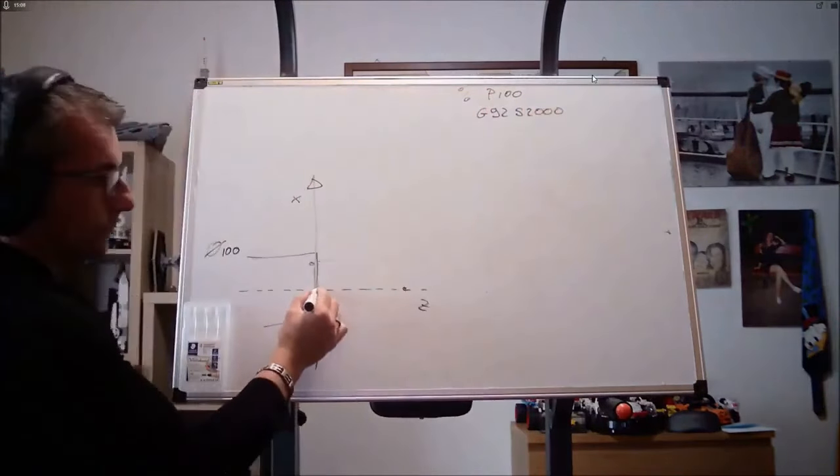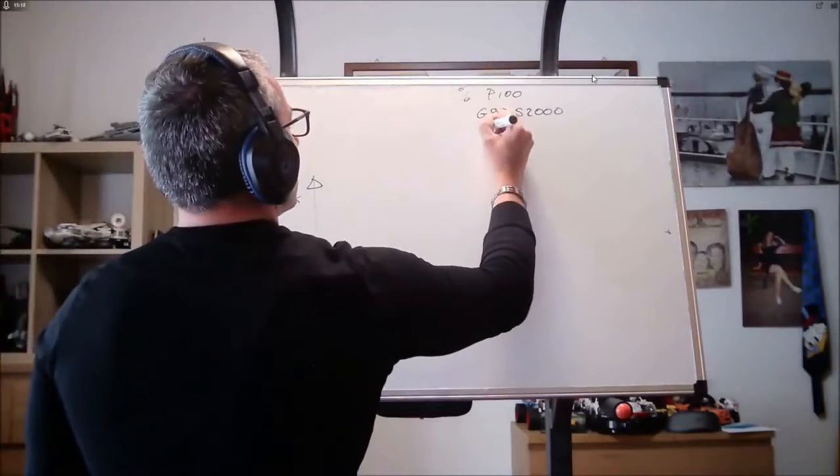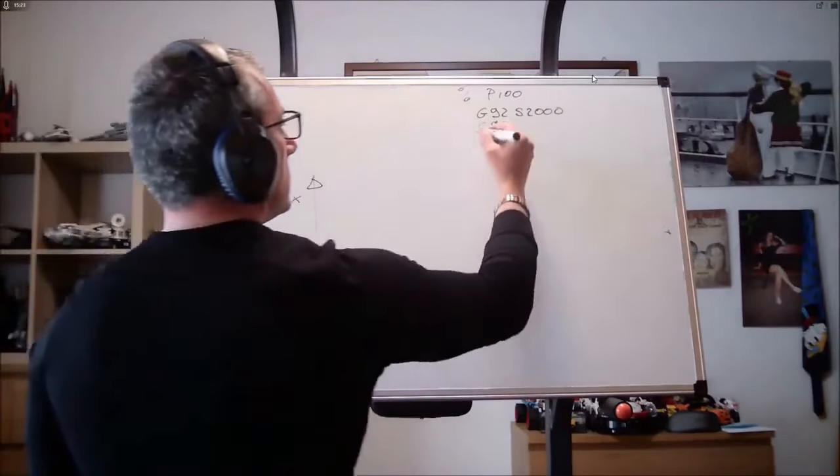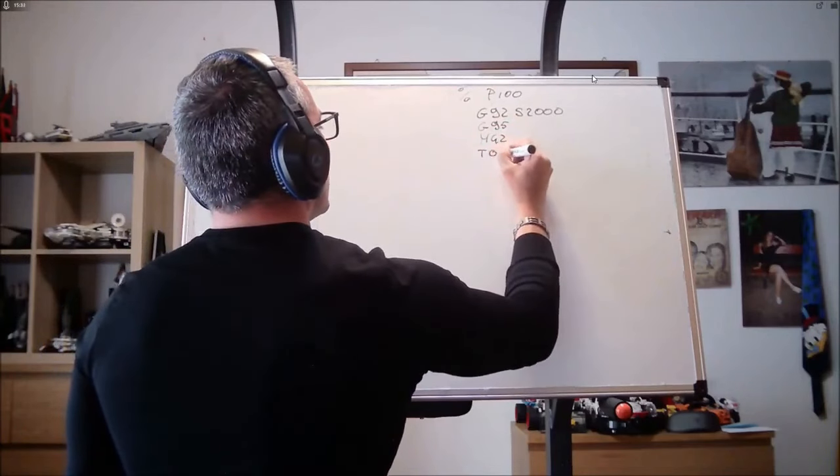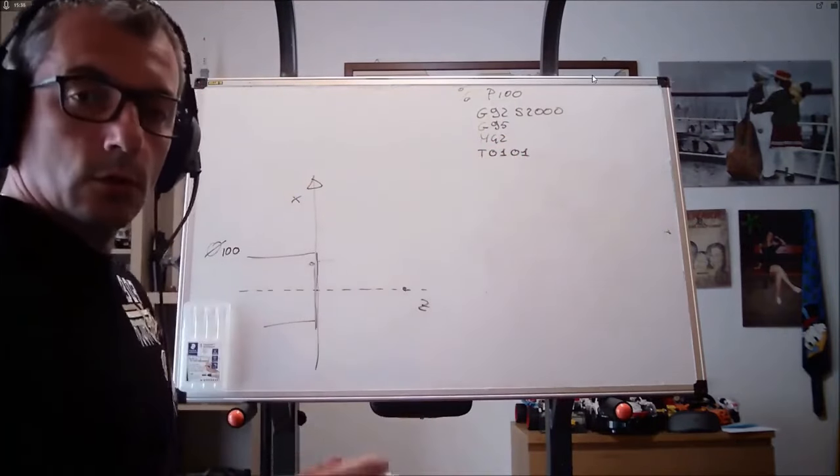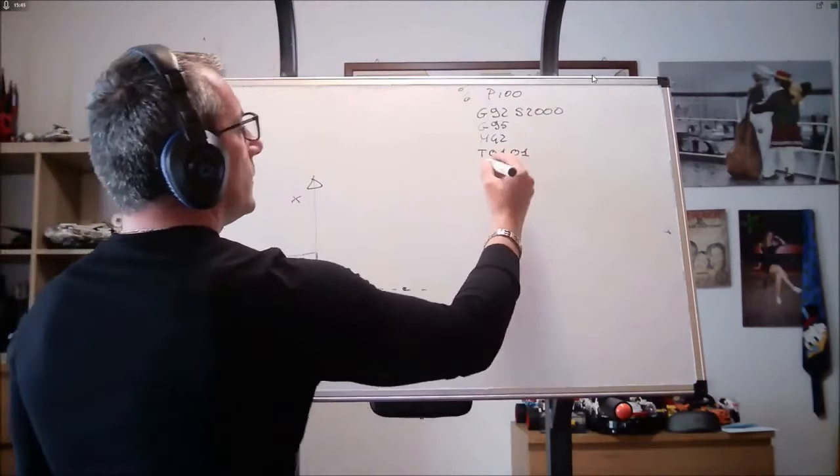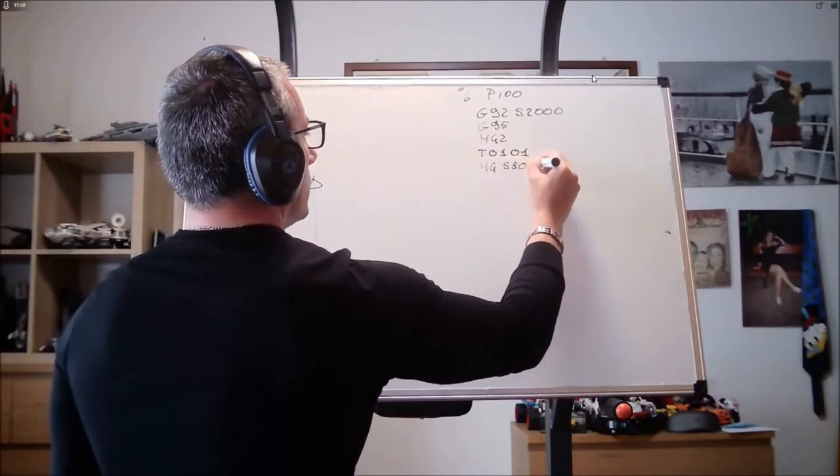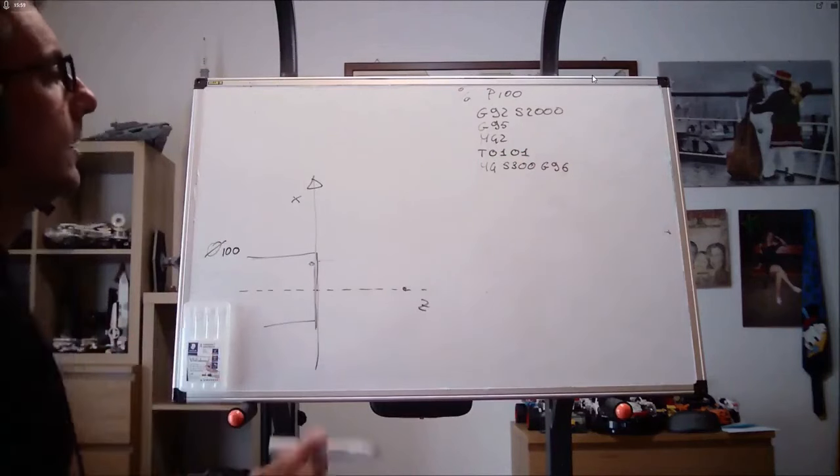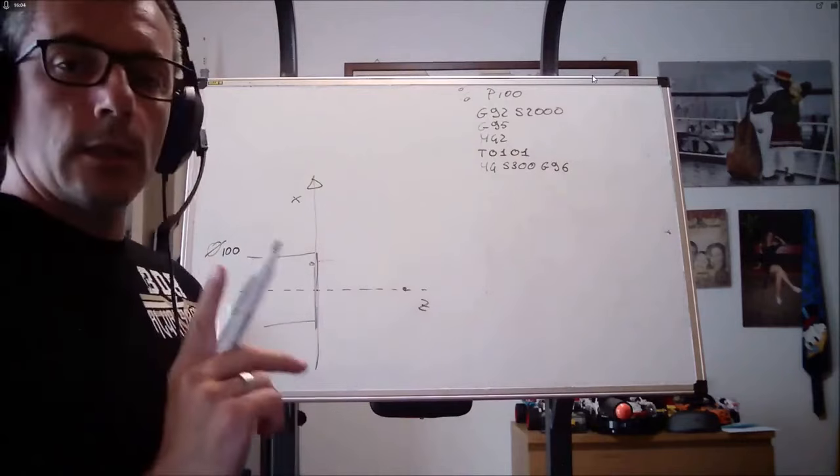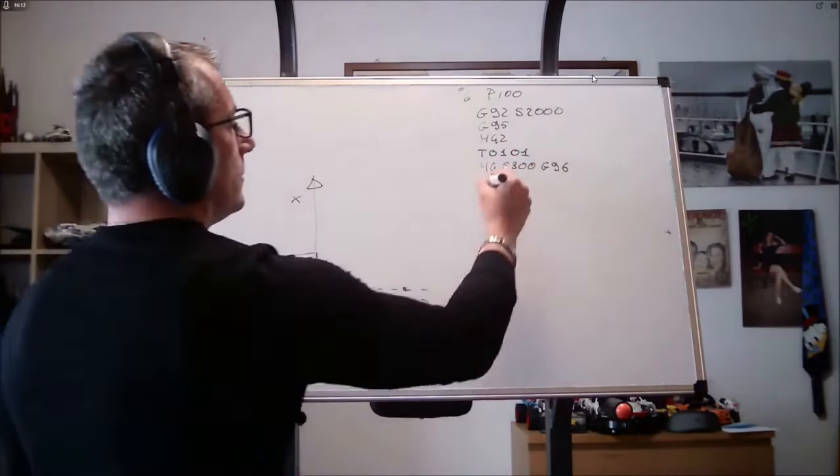Let's do it. So let's write a small facing program. O100. G92 S2000 to prevent our piece from spinning at infinite speed when we get here. G95 to set millimeters per revolution. M42 rapid gamma. T0101. You can enter 1 with correction 1. Don't be scared when you hear about correction. I'll explain it to you. Be patient. In the meantime, you can get familiar with these codes. M4 S300. G96. If you're wondering if the order of these three codes in the same line can be varied, the answer is yes, as long as all three are present. So what do I tell it? Rotate clockwise at 300 meters per minute. So 300 becomes meters per minute because it is followed by G96.